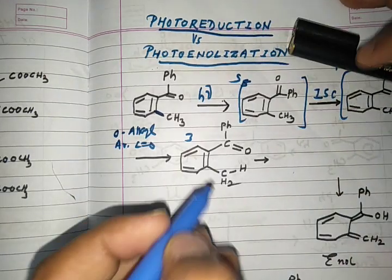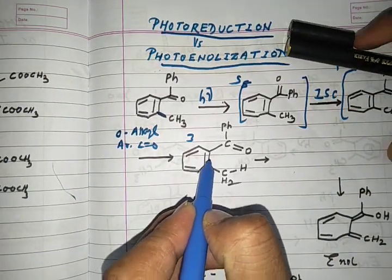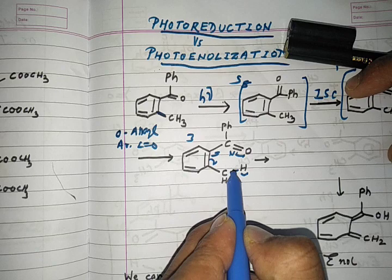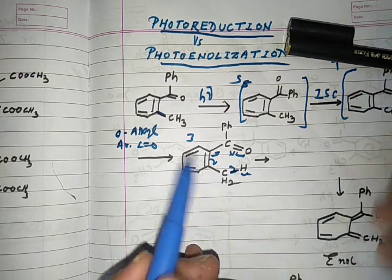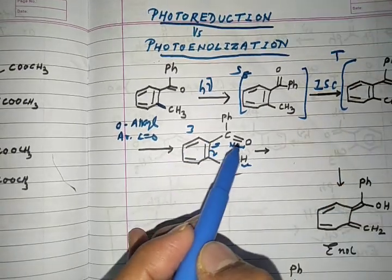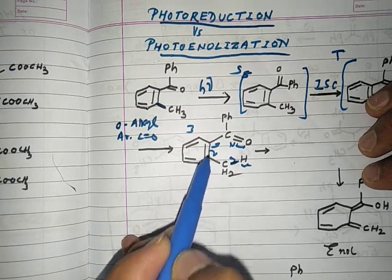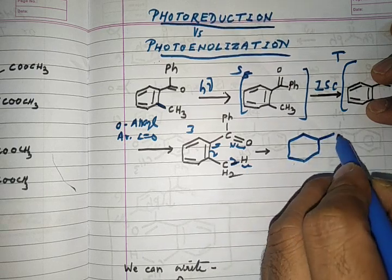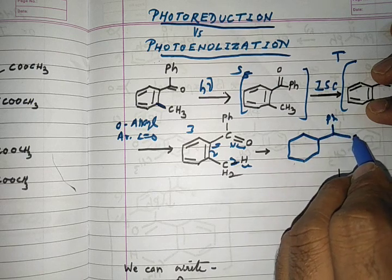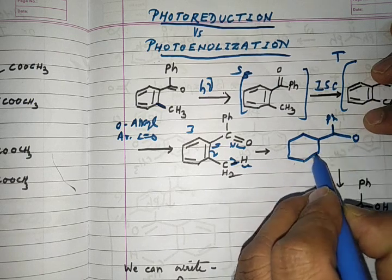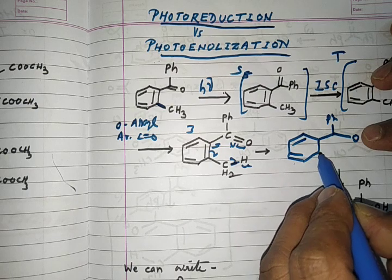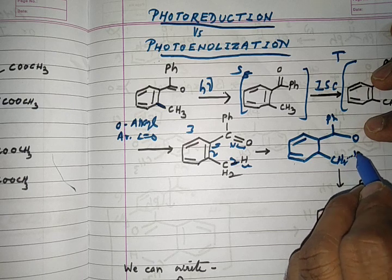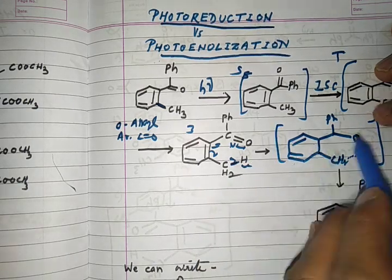The triplet state undergoes fragmentation through a six-membered transition state. This bond breaks, the C–H bond also undergoes breakage, and there is formation of a six-membered transient state — one, two, three, four, five, six — which is very highly stable. This six-membered transition state helps the reaction to proceed.